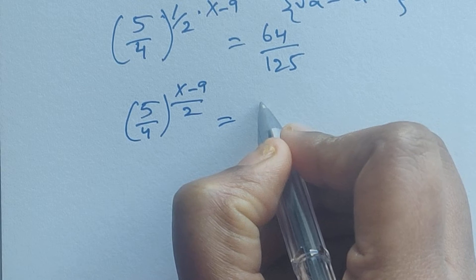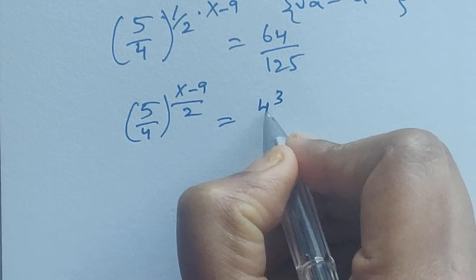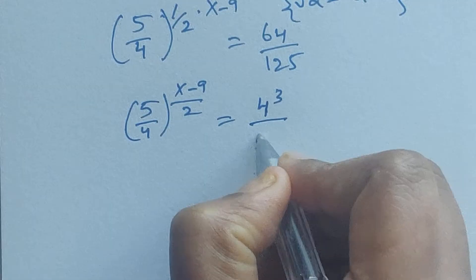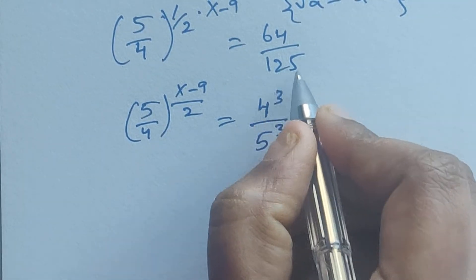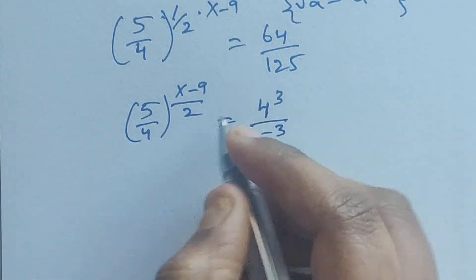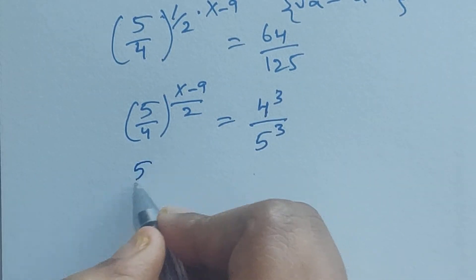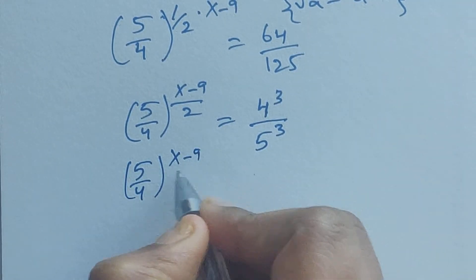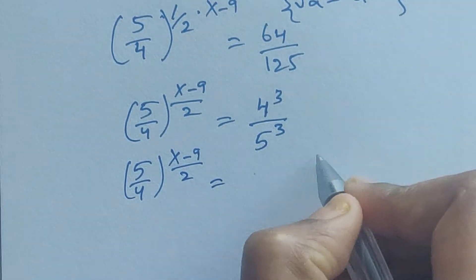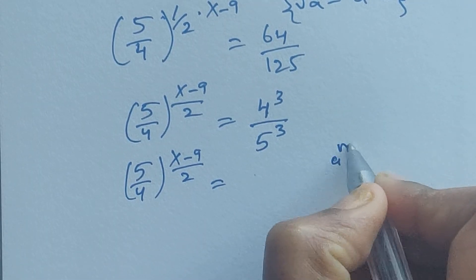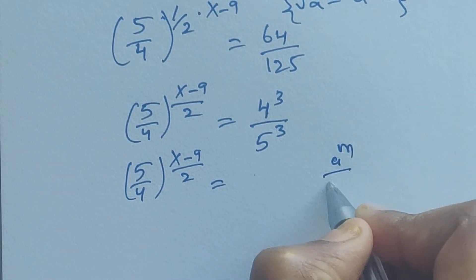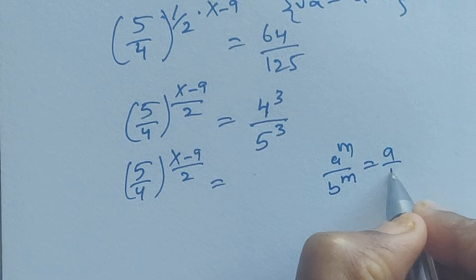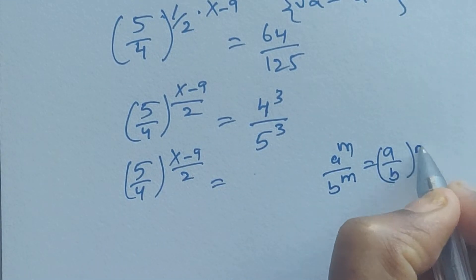We can write 64 as 4 cubed, since 4 cubed is 64, and 5 cubed is 125. So now (5/4) to the power of (x minus 9) divided by 2. Using the formula: a to the power of m divided by b to the power of m equals (a/b) to the power of m.